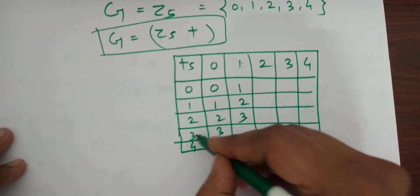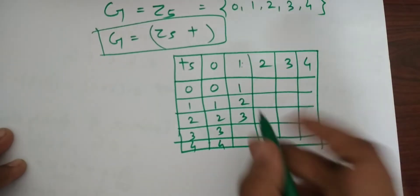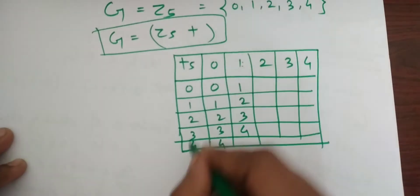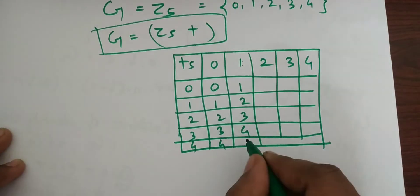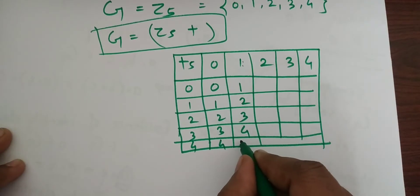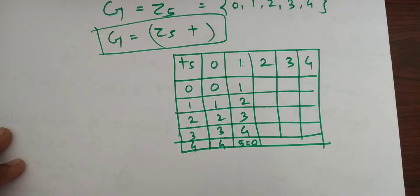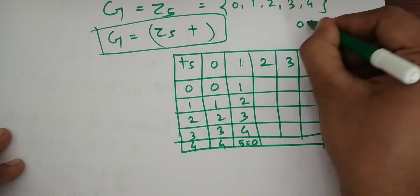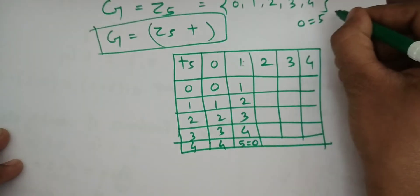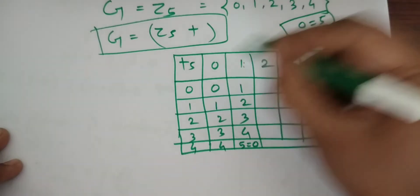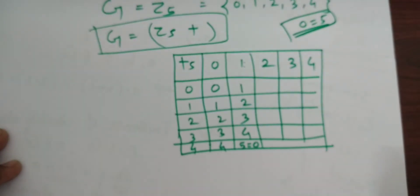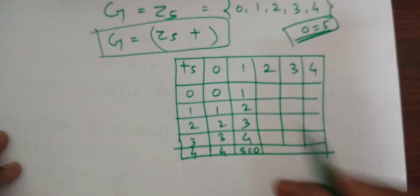1 plus 3 is 4. And 1 plus 4 is 5. But 5 is equal to 0, because in Z5, 0 is equivalent to 5 under modulo 5.